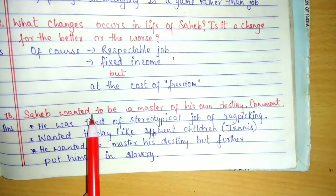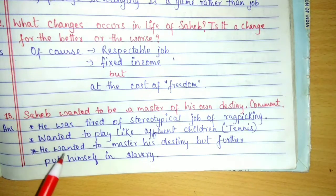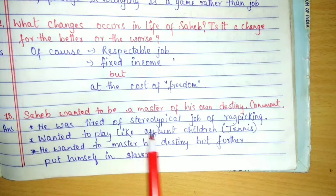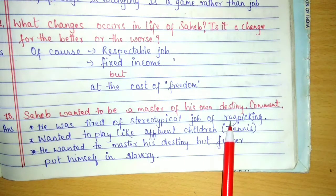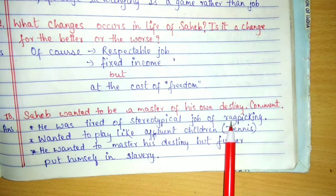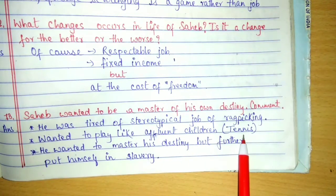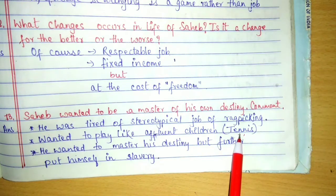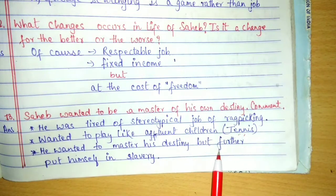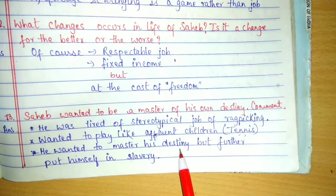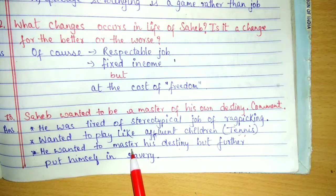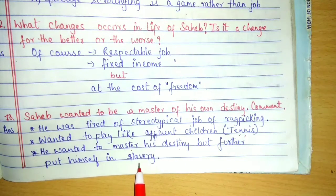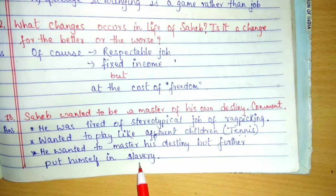Sahib wanted to be master of his own destiny. He was tired of the stereotypical job of rag picking — some days he earned one rupee, some days a hundred, and some days he returned empty-handed. He wanted to play like affluent children; the example of tennis is given. He wanted to earn money to lead life according to his own will, but further he was enslaved by this job because he had to work under the instructions of the owner.